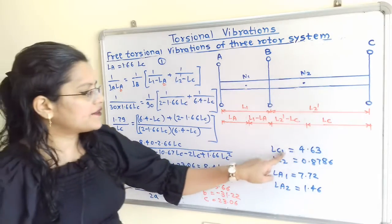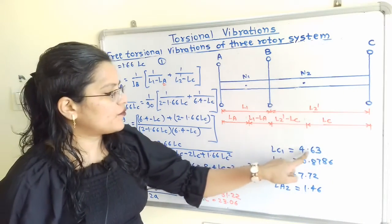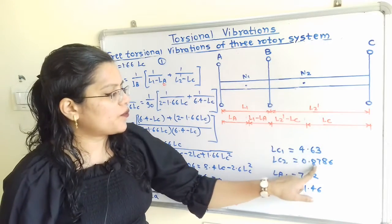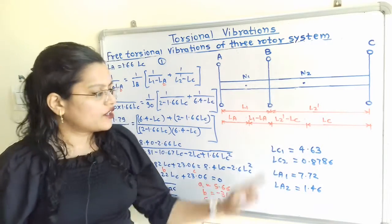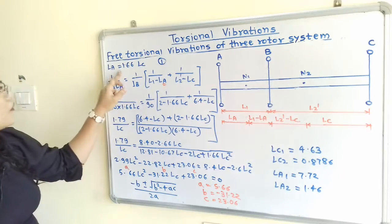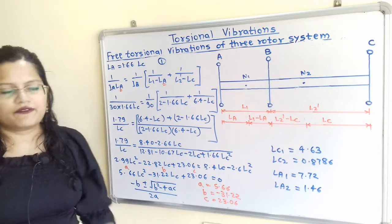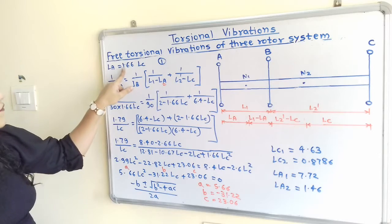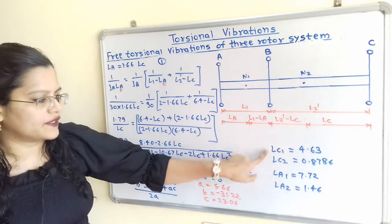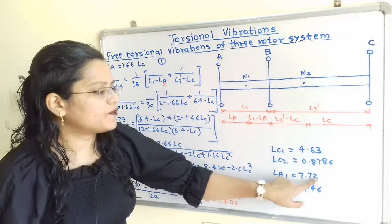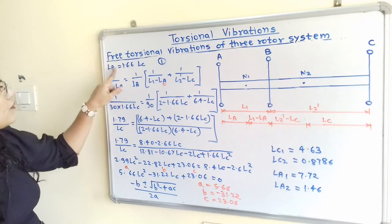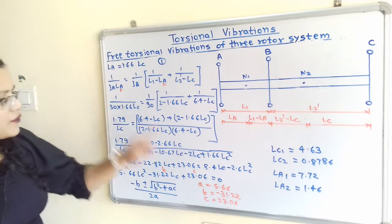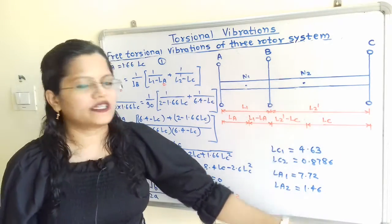The two solutions are LC1 = 4.63 and LC2 = 0.8786. From equation 1, LA1 = 1.66 × LC1 = 7.72, and LA2 = 1.66 × LC2 = 1.46.